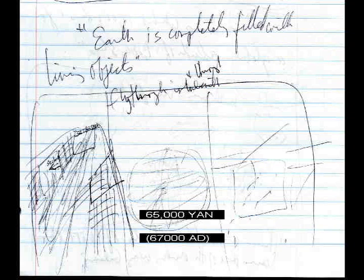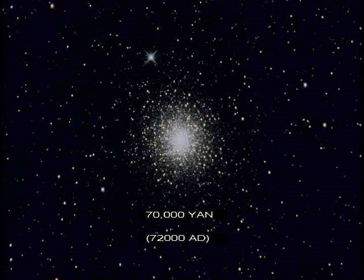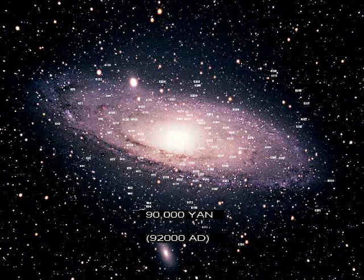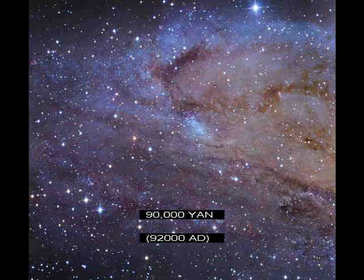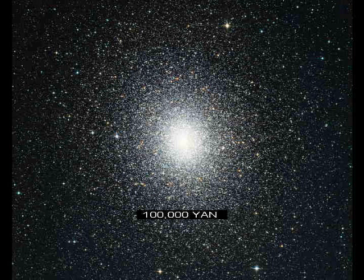Earth is completely filled with living objects. Humans inhabit 10,000 stars and form a globular cluster of 1,000 stars. A human-made globular cluster of 10,000 stars leaves the plane of the Milky Way galaxy. All planets of Earth's star consumed. Earth's star consumed.